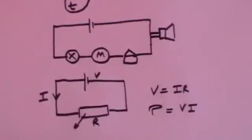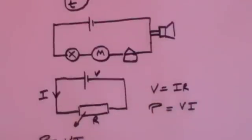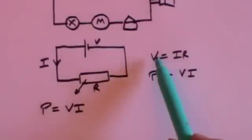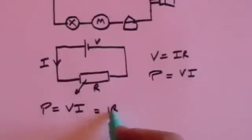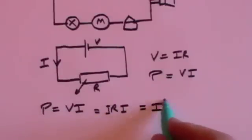Now if power is equal to VI, you can see that V is equal to IR. Sorry, I'll say that again. If P equals VI and V equals IR then I can say that P equals V, which is IR, times I. And that's I squared R.